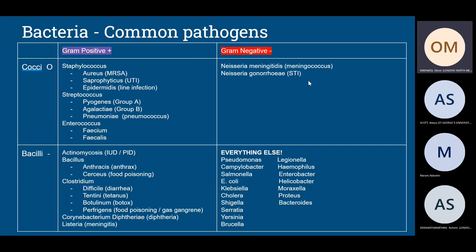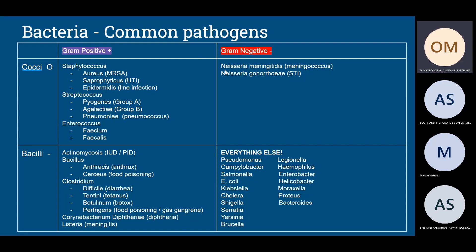For gram-negative cocci, there's really only one genus to remember: Neisseria. The two main species are Neisseria meningitidis (causing meningococcal infections) and Neisseria gonorrhoeae (causing gonorrhoea, a sexually transmitted infection). Those are the main gram-negative cocci to know.